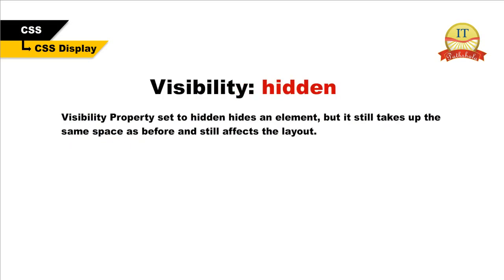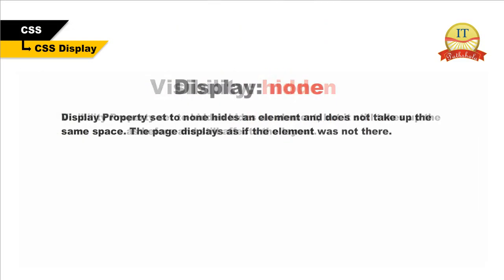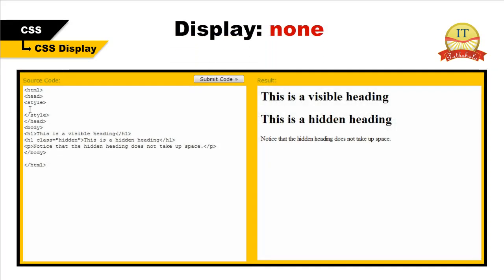Hiding an element can be done by setting the display property to none or the visibility property to hidden. The visibility property set to hidden hides an element, but it still takes up the same space as before and still affects the layout. Display property set to none hides an element and does not take up the same space — the page displays as if the element was not there.